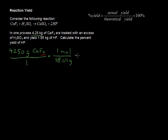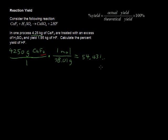Grams cancel out, and we get approximately 54.431 moles — some digits continue beyond that, I've just rounded there. Don't round too early; hang on to all your decimal places in your calculator until the end. Only round at the end.